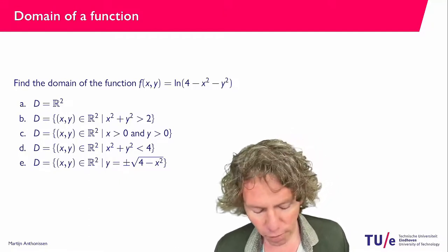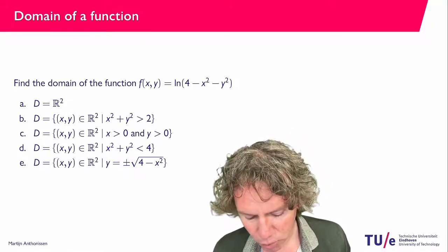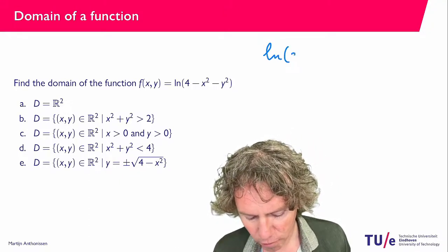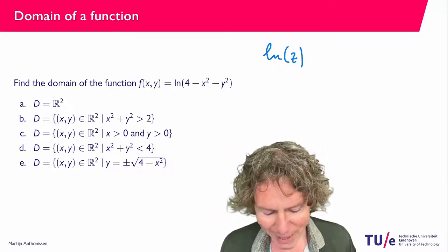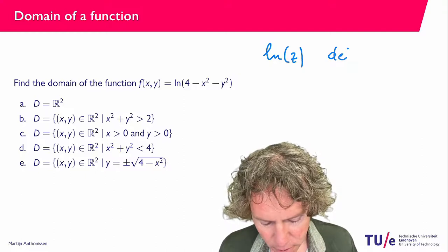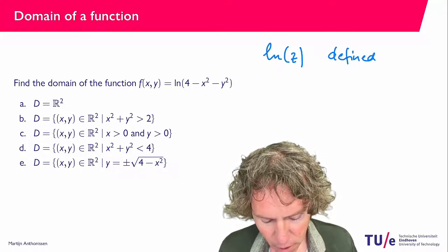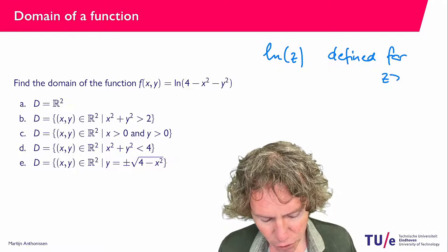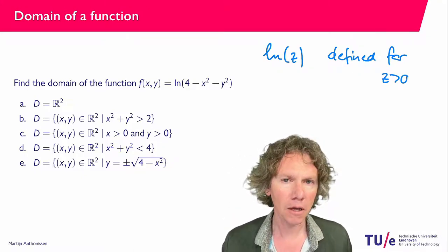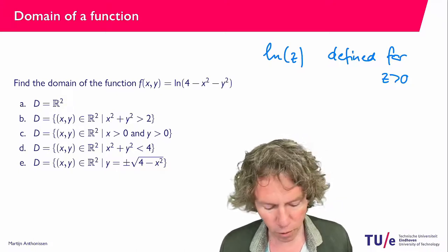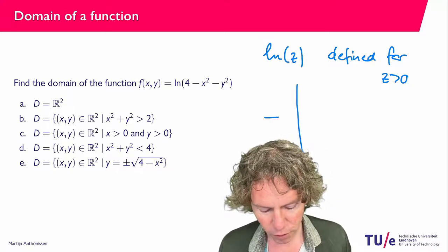Now what you should think of is that the expression ln of some argument that I denote z here is defined for positive z values. So z should be bigger than 0, not equal to 0. As you may recall if you draw the graph of the function,